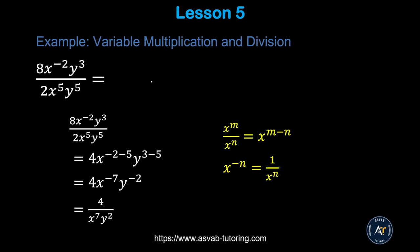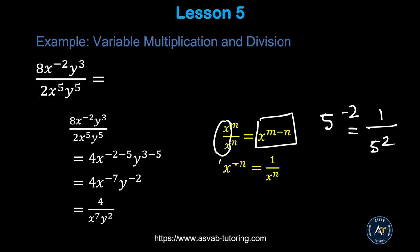The next thing we'll learn is how to divide algebraic expressions. The formula: if both terms are x — top and bottom — and you want to divide, you have to subtract the exponents. Another important thing to know: x to the power negative 1 equals 1 over x to the power 1. So 5 to the power negative 2 equals 1 over 5 squared.